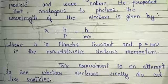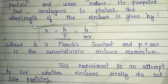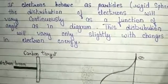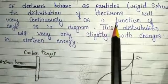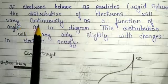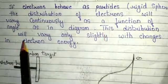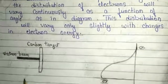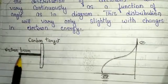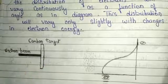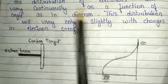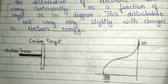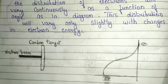Using this theory in electron diffraction, we get two important conditions. The first condition is: if the electron behaves as a particle — a rigid sphere — the distribution of electrons will vary continuously as a function of angle, as shown in the diagram. This distribution will vary only slightly with change in electron energy. So when an electron beam is passed through a carbon target, the electron energy distribution varies continuously as a function of angle.